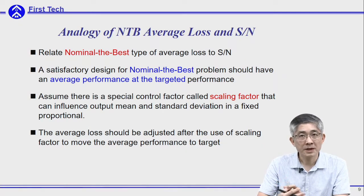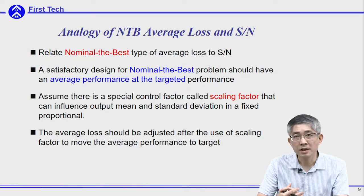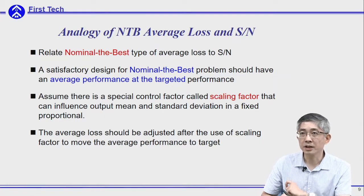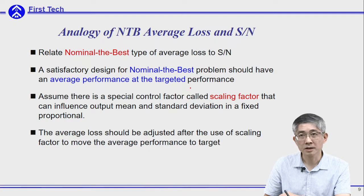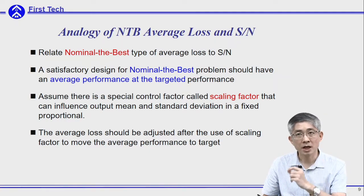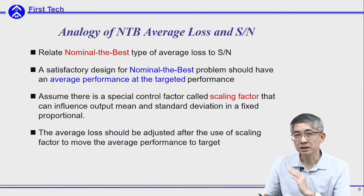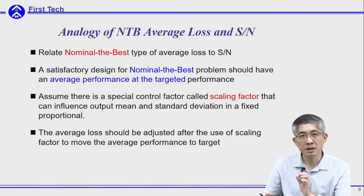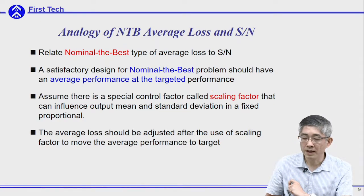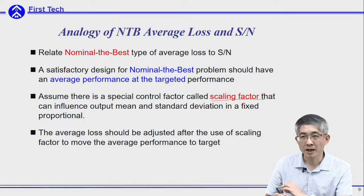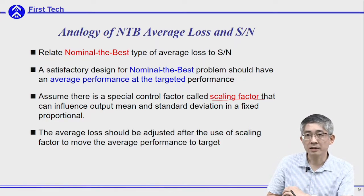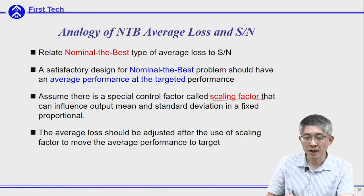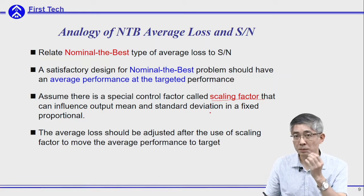In the nominal-the-best problem, he insists a satisfactory design should have the average performance at a target. Therefore he proposed a two-stage optimization after the parameter design. He assumed there will be some specific control factor, which he called a scaling factor.